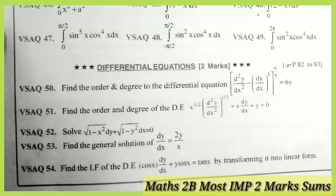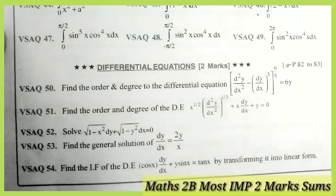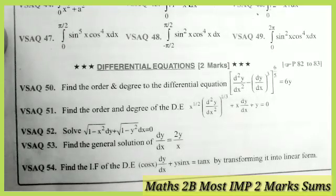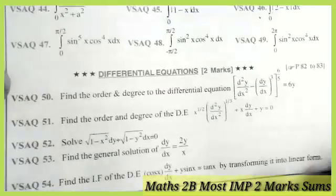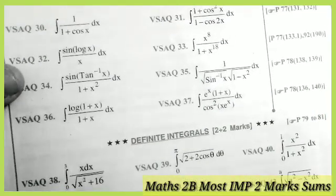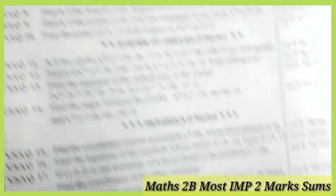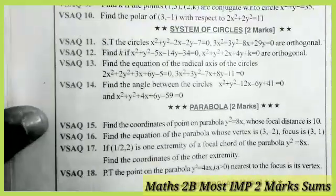These are the most frequently repeating and expected models of the 2-marks questions. Students who prepare these 54 2-marks questions will definitely attempt a minimum of 5 questions in the public examination. These model questions are very important and you will easily answer a minimum of 5 questions in the examination. Prepare all these questions without leaving any. From the geometry part total number of questions is 5, and from the calculus part total number of questions is 5. Prepare all these questions properly — wish you all the best.